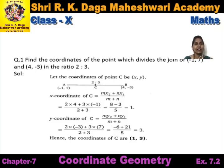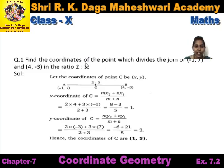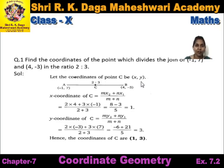Now let's start exercise 7.2. Question 1: Find the coordinates of the point which divides the join of (-1, 7) and (4, -3) in the ratio 2 to 3. We need to find the coordinates of point C which divides A(-1, 7) and B(4, -3) in the ratio 2 to 3. Let the coordinates of point C be (x, y).